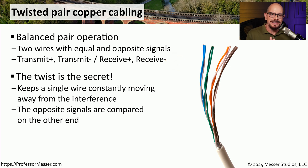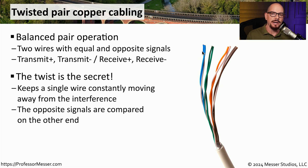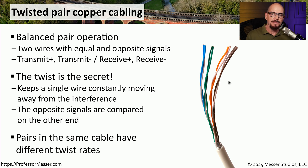The reason that we have the same signal being sent in different forms is so that we can recognize and correct if there happens to be any type of interference. This twist in the two wires means that at least one of these wires will always be moving away from interference, allowing us to compare these signals on the receiving end to determine what the actual signal should look like. Another interesting part is that the different cable pairs have different twist rates — some pairs are twisted much tighter than other pairs.